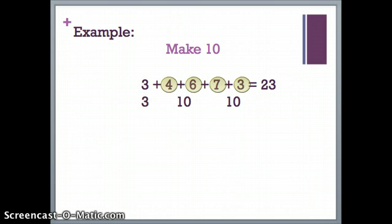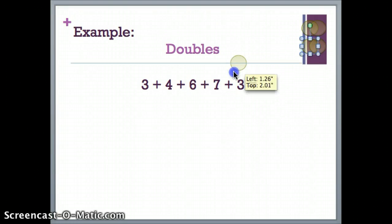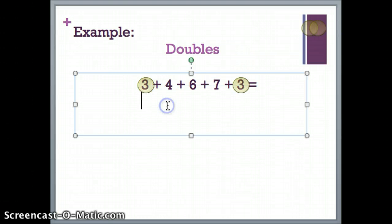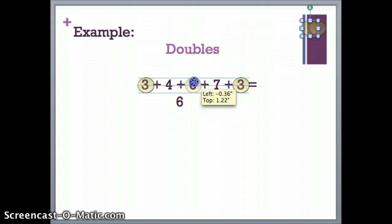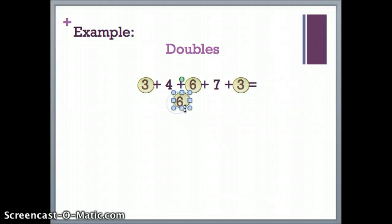Let's try this problem again, but instead of making 10, I'm going to use doubles. I can see 3 plus 3, since doubles facts add the same number. 3 and 3 make 6. I see that 6 is in my original equation, so 6 plus 6 is a doubles fact, and that makes 12.